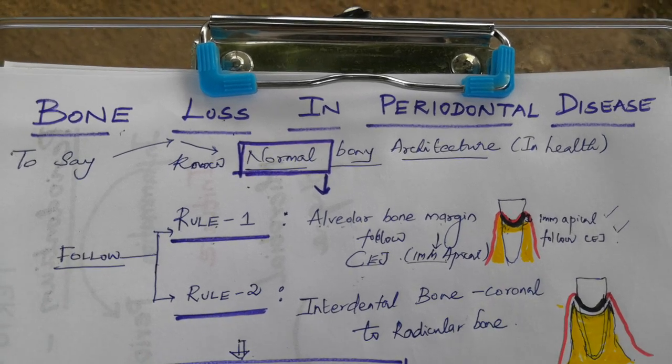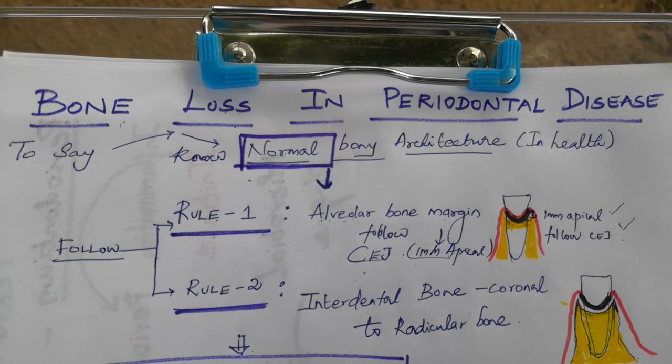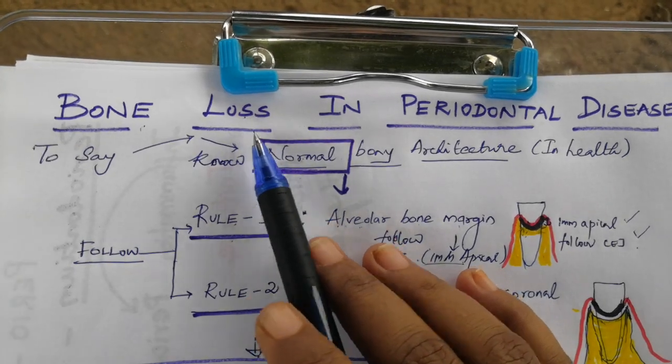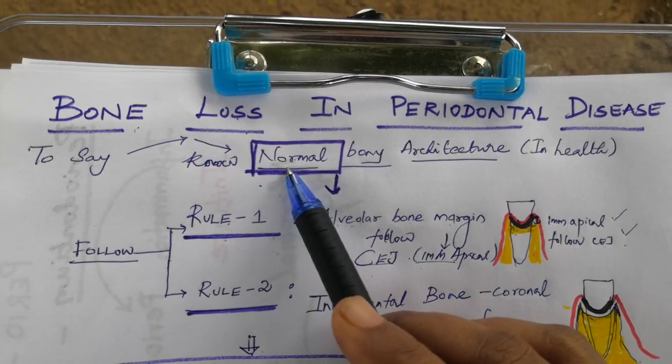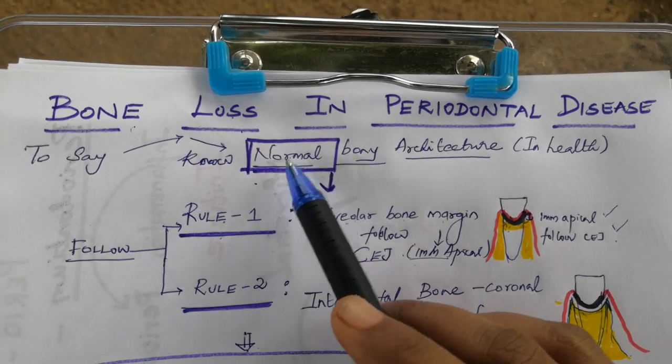Today's class will be on bone loss in periodontal disease. To understand bone loss, we first need to know what the normal bony architecture looks like in a healthy condition.